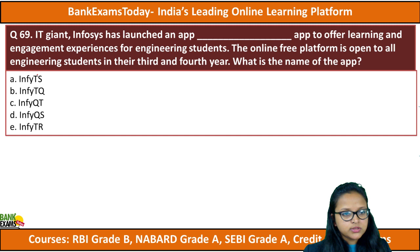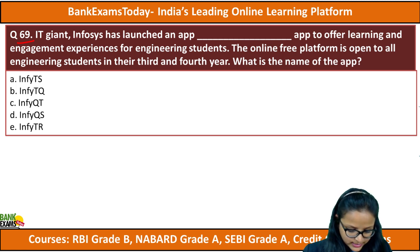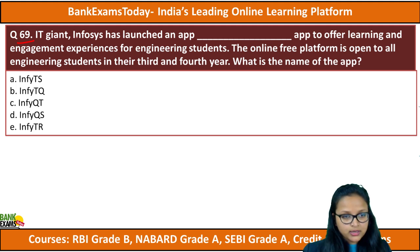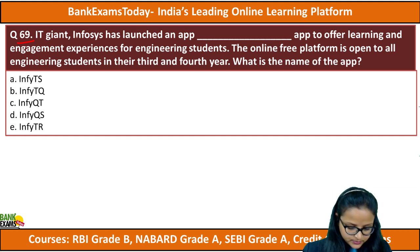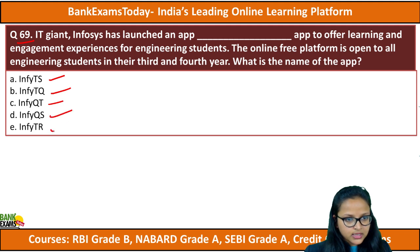Moving to question 69: Infosys has recently launched an app for engineering students. What is the name of that app? The options are Infosys TQ, Infosys TS, QT, QS, or TR. The answer is TQ — Infosys TQ.